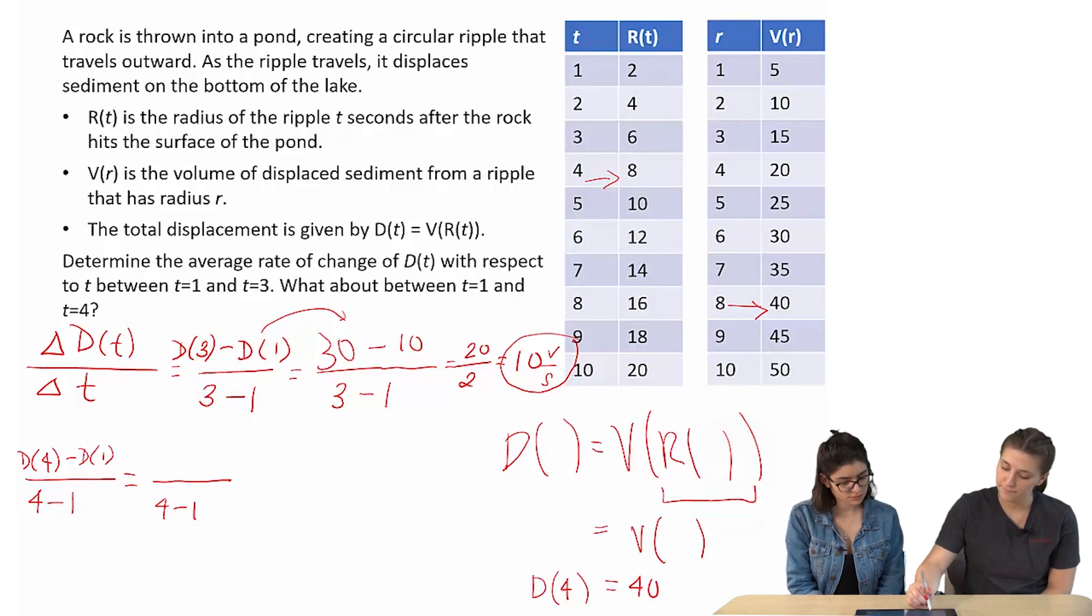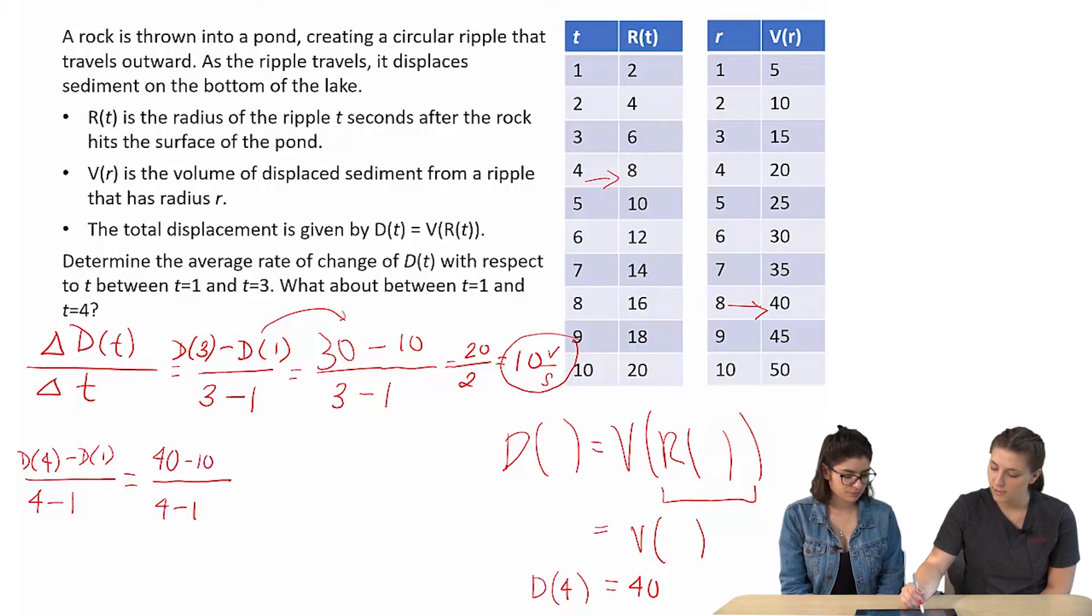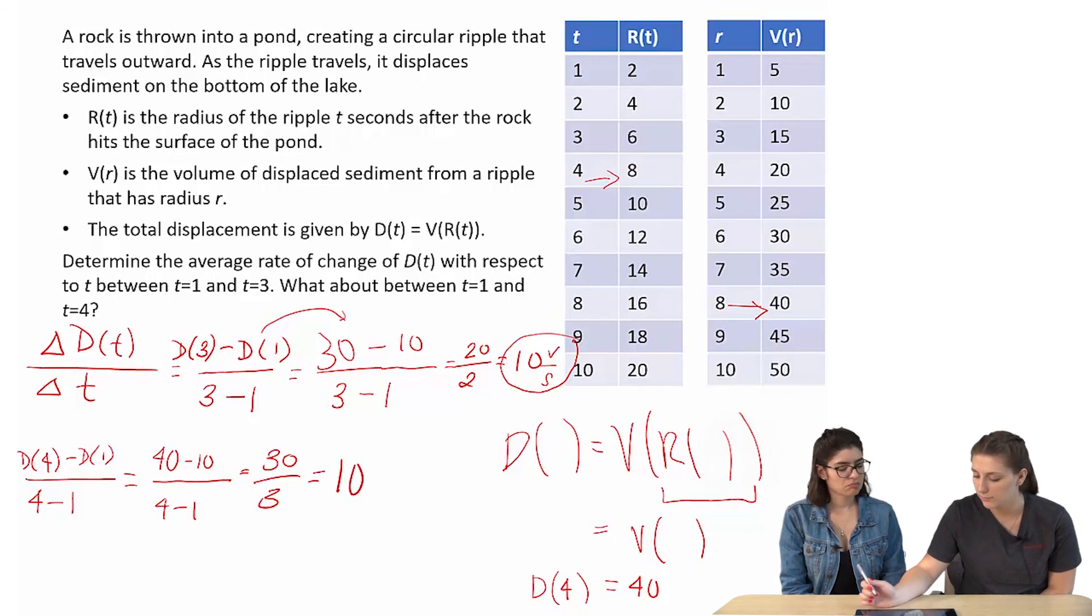And we already did D(1), so we did 1, so that's 10. So we get 30 over 3, which is, again, 10. Okay.